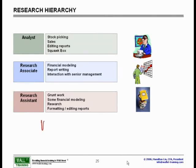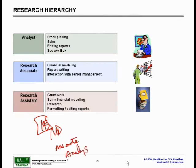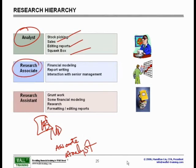The research hierarchy is fairly straightforward but slightly different from investment banking. In investment banking, the managing director is on top and the analyst is at the very bottom. In research, the hierarchy is actually exactly flipped. The top role is called the Research Analyst — they are the stock pickers, they do the sales, they edit reports, and they are the ones appearing on TV on Squawk Box.